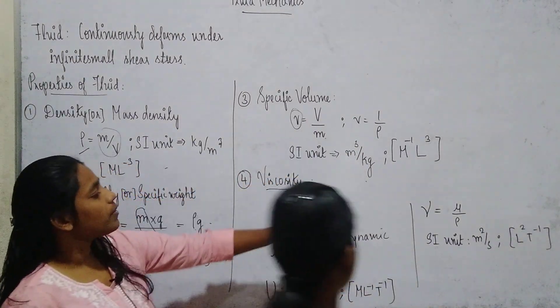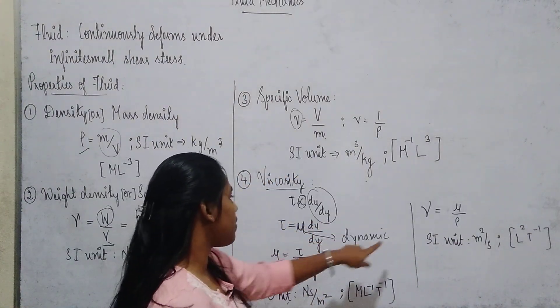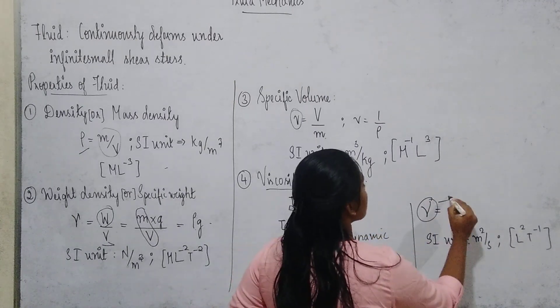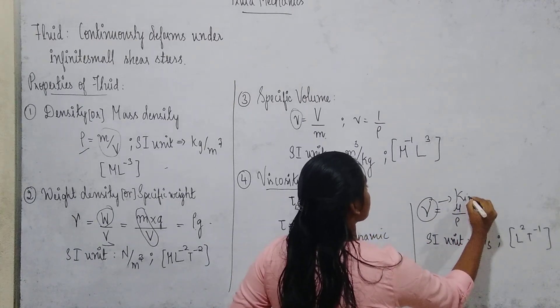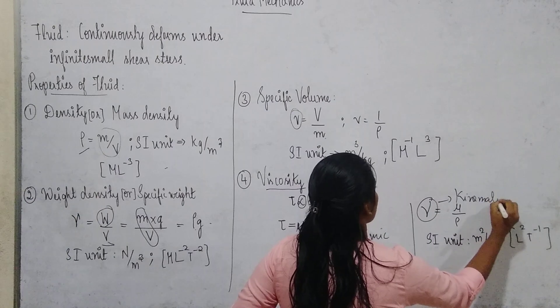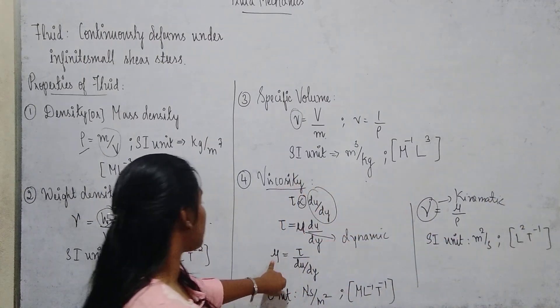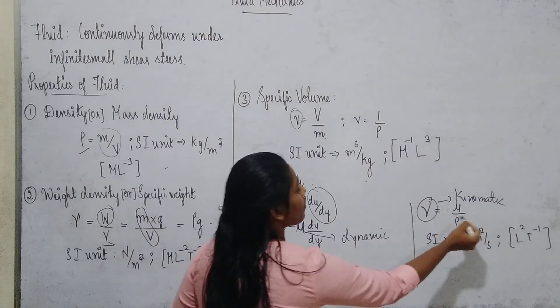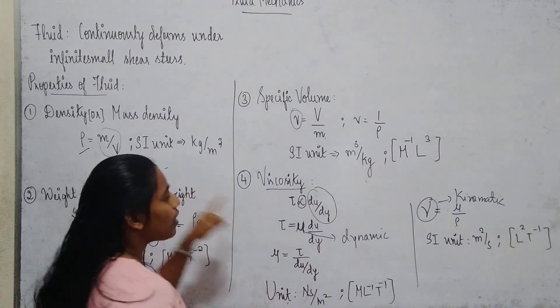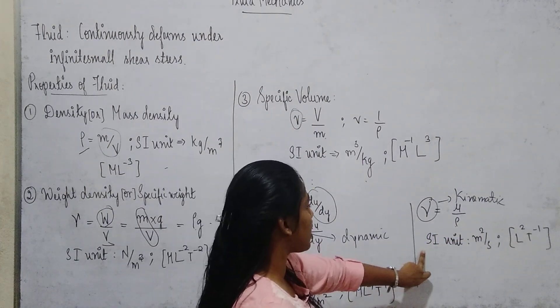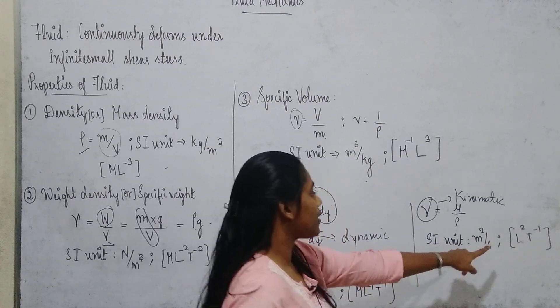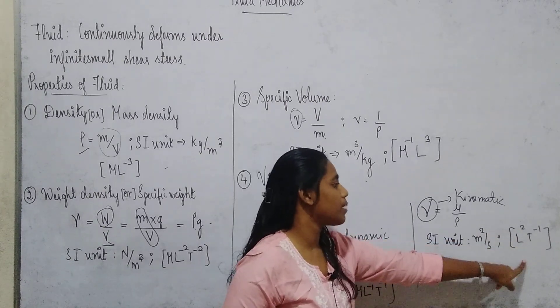The next one, after dynamic viscosity, is kinematic viscosity. Kinematic viscosity is equal to dynamic viscosity, that is mu, divided by rho. Rho is density. The SI unit of kinematic viscosity is meter square per second and the dimension is L^2 T^-1.